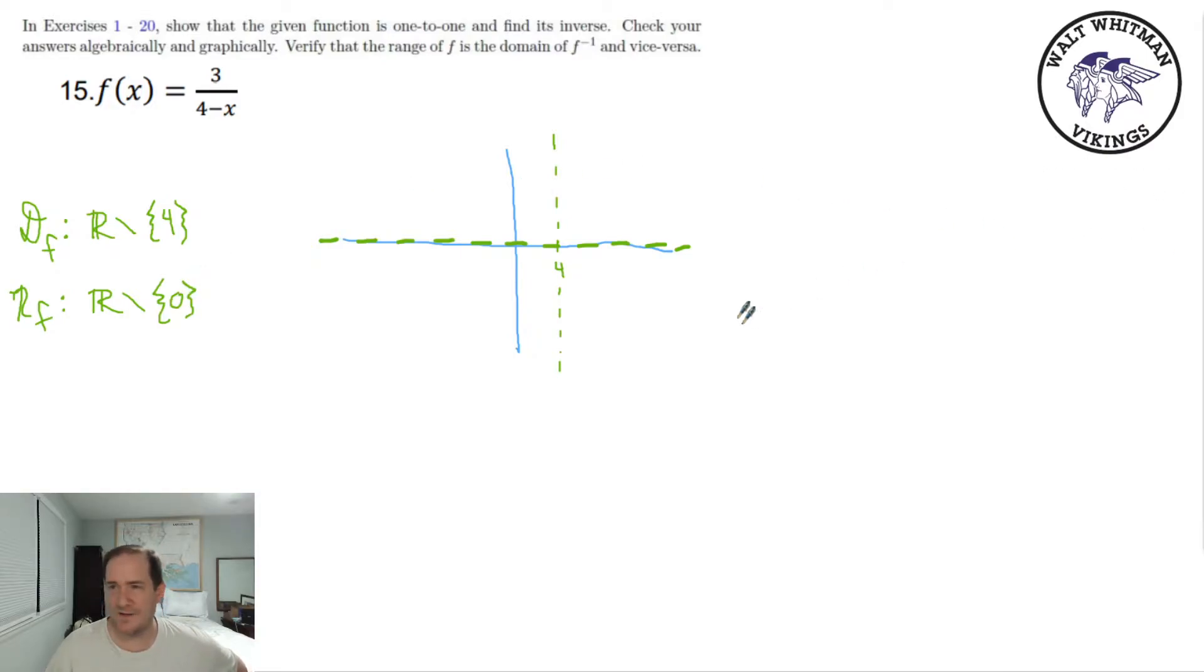And then to find the shape of the graph, I would recommend you do a little t-chart or something. So we already know that 4 is where we're undefined. So you can pick a point left of 4, like 3. Plugging in 3 gives 3 over 1, so 3. So the point (3,3) is on our graph.